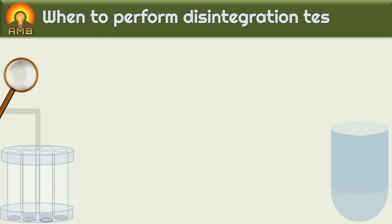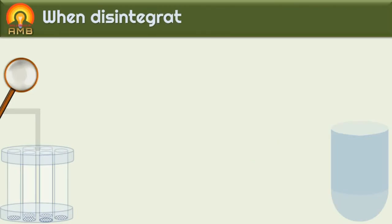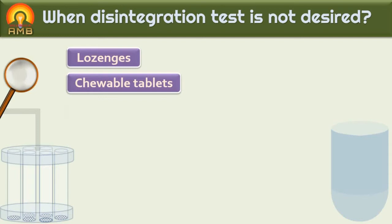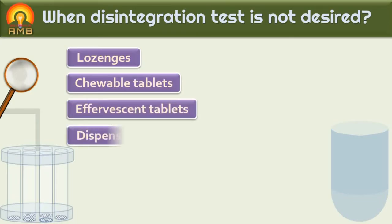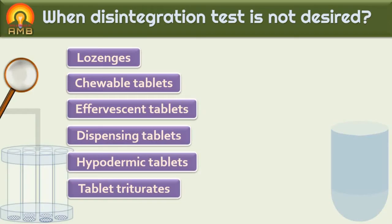Now let's discuss when to perform the disintegration test. The test is performed depending upon the use of the tablet. The disintegration test is required for tablets which are swallowed orally. The test is not desired for tablets which are dissolved in the mouth like lozenges, chewed in the mouth cavity like chewable tablets, or dissolved in water before administration like effervescent tablets, dispensing tablets, hypodermic tablets, and tablet triturates.